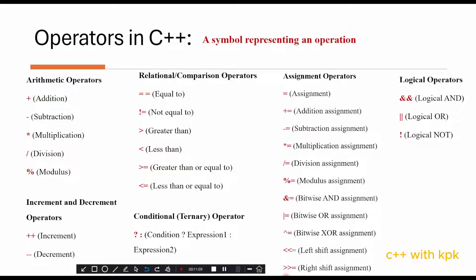Last is the conditional operator, also known as the ternary operator in C++. It is used to evaluate a condition and return one of two values based on the result of that condition. We will look at the practical application of these operators in the next session.